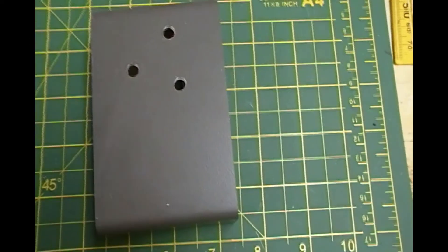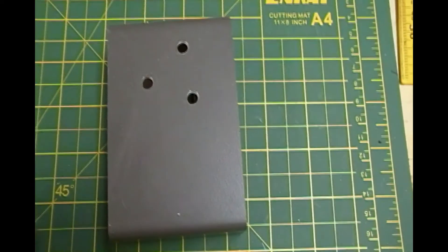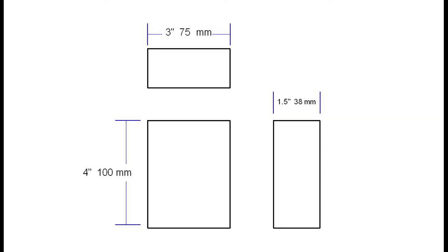Instead I used a larger piece of channel that I cut from a discarded treadmill frame. It measures one and a half inches deep, four inches high and three inches long. The metric equivalent is 38 millimeters deep, 100 millimeters high and 75 millimeters long.